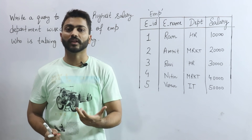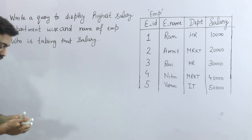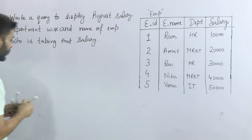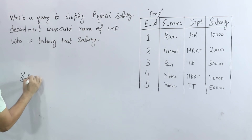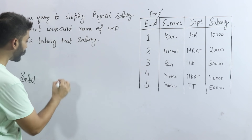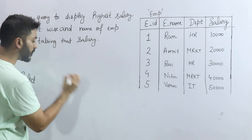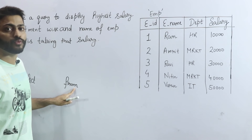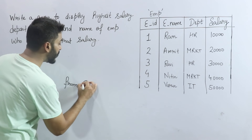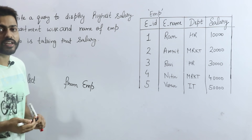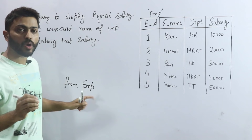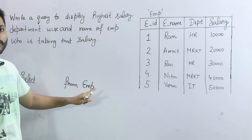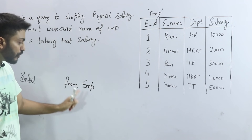यहाँ पर अगर हम query की बात करें तो: write a query to display the highest salary department wise. सबसे पहले FROM clause से start करते हैं — हर SQL query FROM से start होती है क्योंकि FROM के साथ हम table का name लिखते हैं। तो FROM employee — मतलब output जिस table से चाहिए उसका नाम mention किया।